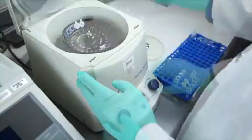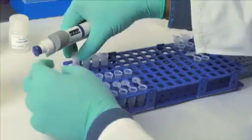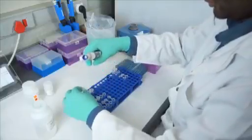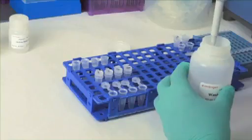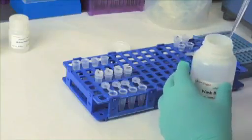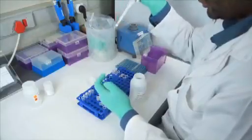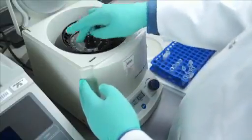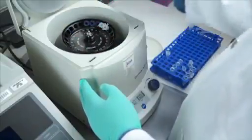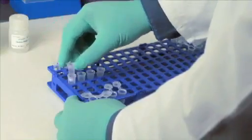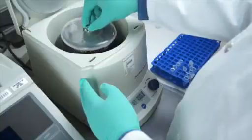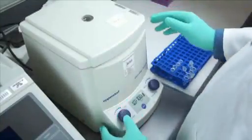Centrifuge the column at 10,000 RCF for 1 minute. Transfer the column into a new collection tube. Wash the column with 650 microliters of wash buffer. Centrifuge the column at 10,000 RCF for 1 minute. Transfer the column into a new collection tube. Centrifuge the column at maximum speed for 2 to 3 minutes.